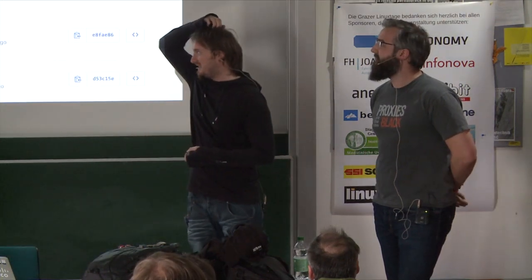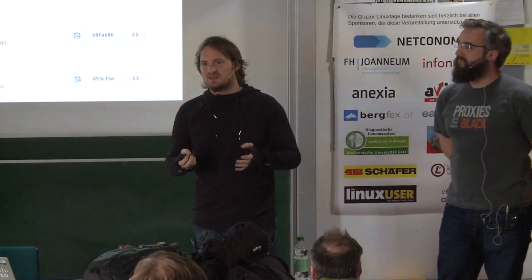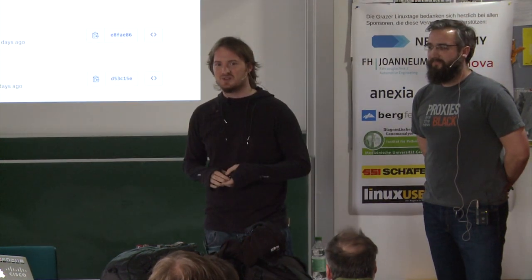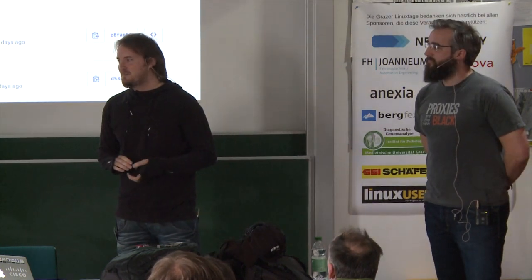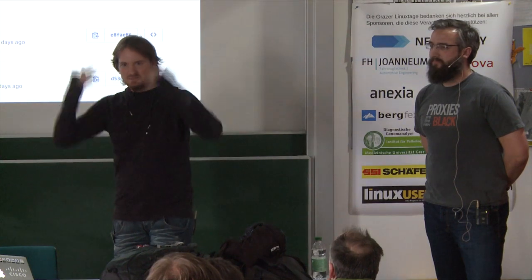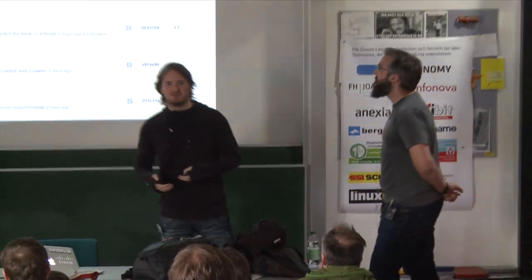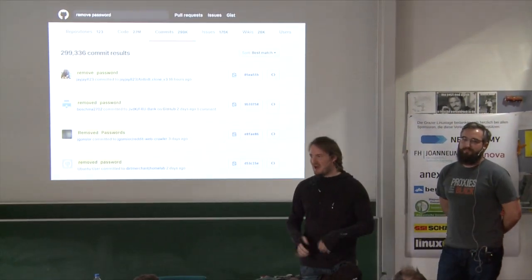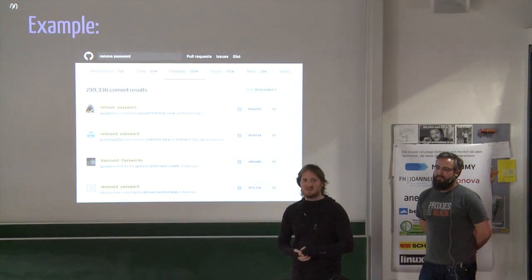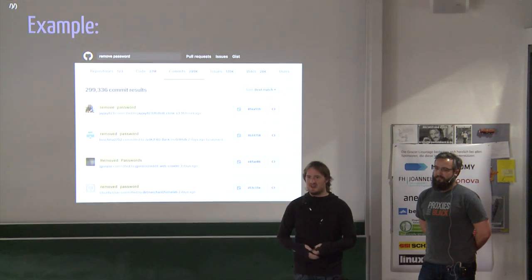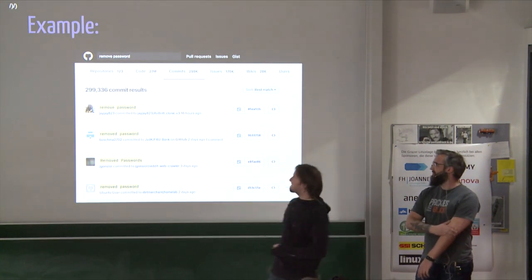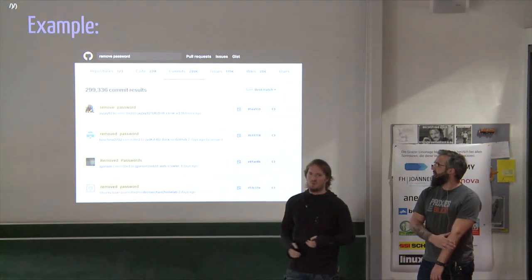A real-world example I noticed a few weeks ago: some of you might have heard about the 'remove password' commit message search on GitHub. If you search 'remove password' on GitHub, you get all commit messages containing those words. It turns out most of them were people who had accidentally hard-coded credentials — root password and IP address — into source code and pushed it to GitHub. What did they do? They removed the credentials, then added a commit message telling everyone they removed the password at that stage. You just search the commit messages, hit the diff button, and you can see exactly what they were trying to hide.